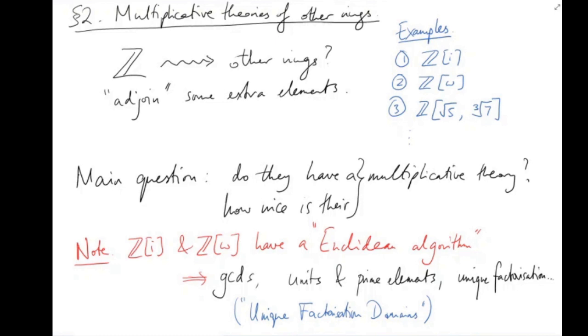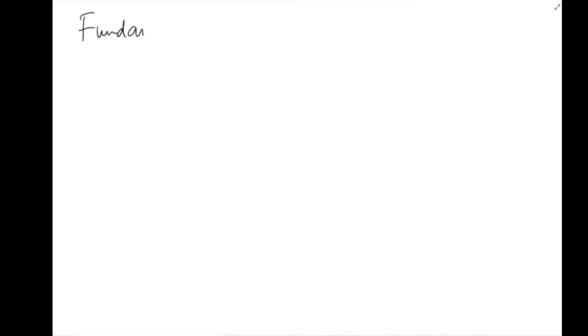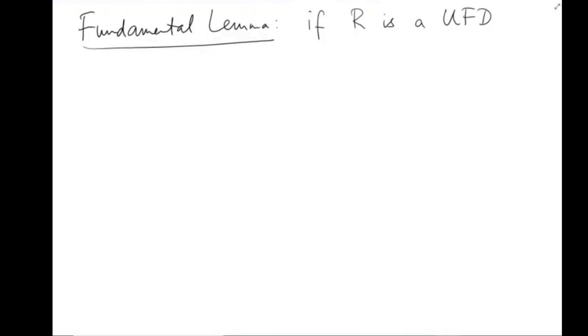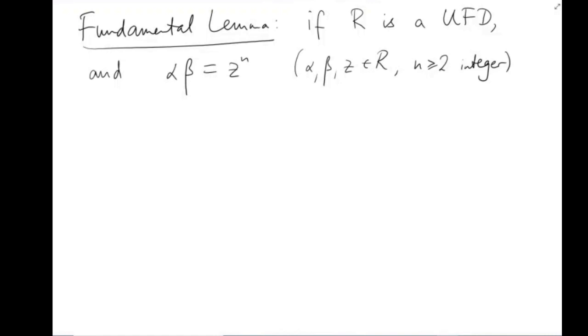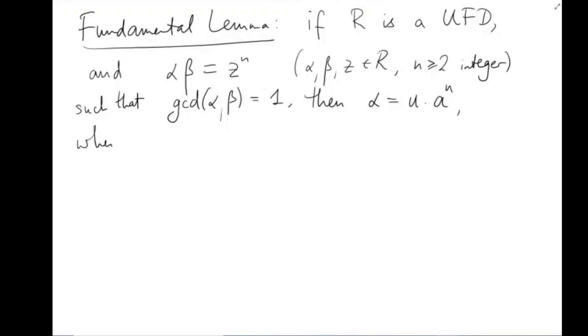The following tool is something we'll use several times — I'll call it the fundamental lemma. It says: if R is a unique factorization domain, and α times β equals z to the N, where α, β, and z are elements of R and N is some integer at least 2, and the greatest common divisor of α and β is 1, then α is U times a to the N, where U is a unit and a is any element in R.